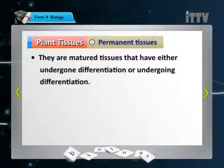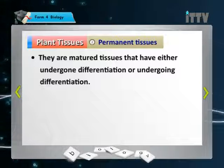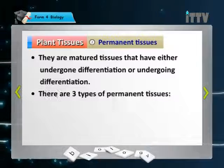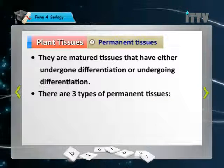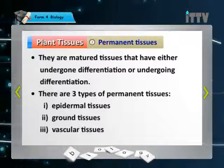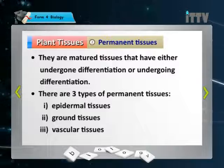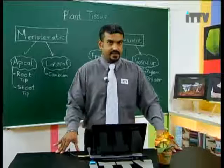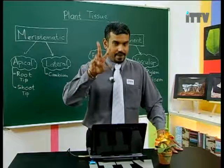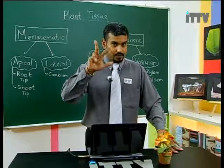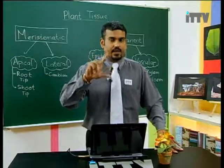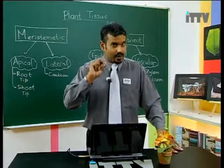Permanent tissues are major tissues that have either undergone differentiation or are undergoing differentiation. There are three types of permanent tissue: epidermal tissue, ground tissue, and vascular tissue. You must remember these three — epidermal, ground, and vascular tissue.